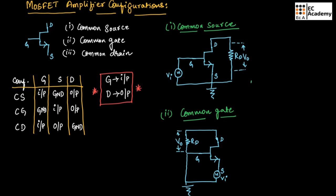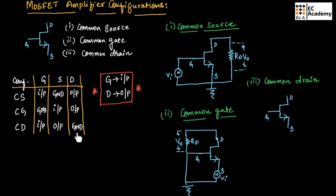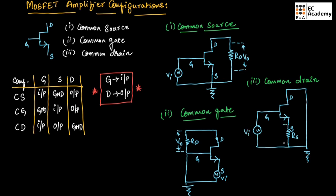In common drain configuration, gate is connected to input, source is connected to output, and drain terminal is connected to ground. We connect the drain terminal to ground, and since the source terminal is connected to output, we take a resistor RS connected to ground. The input Vin is connected across the gate terminal, and across the source terminal we can measure the output voltage. This is the general circuit for common drain configuration.